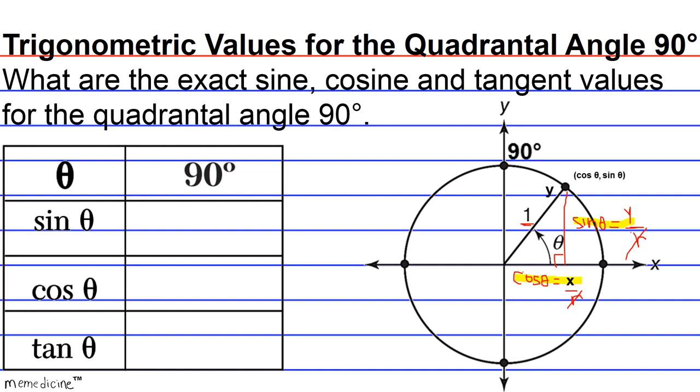And this is really awesome, because what it means is that the points where the unit circle intersects the x or y axes can be conveniently used to find the exact trigonometric values of quadrantal angles. So, let me demonstrate to you exactly what I'm talking about.